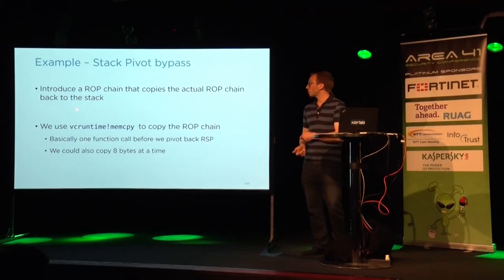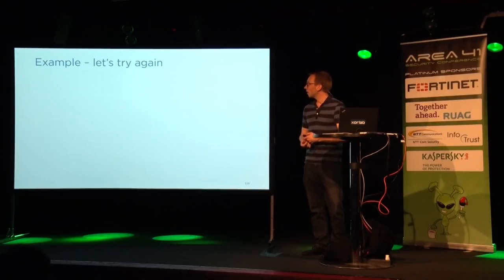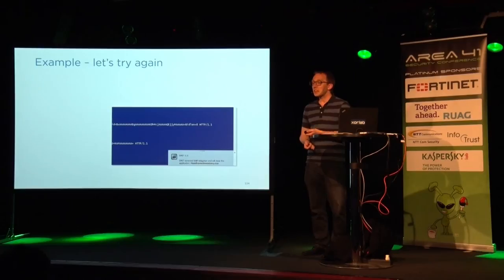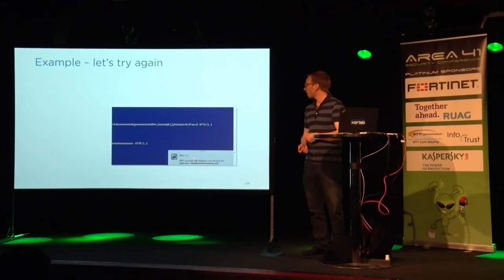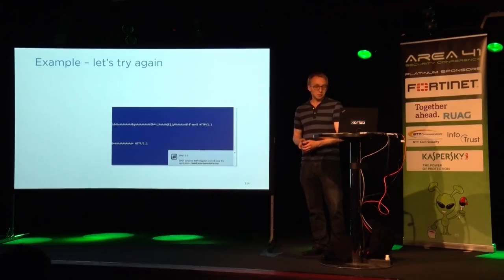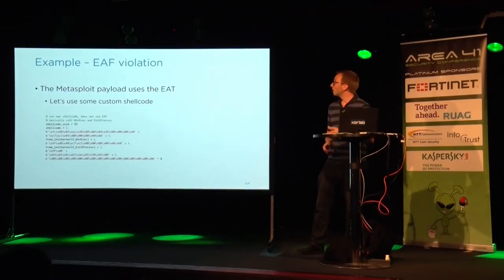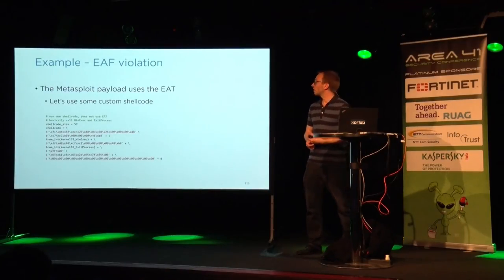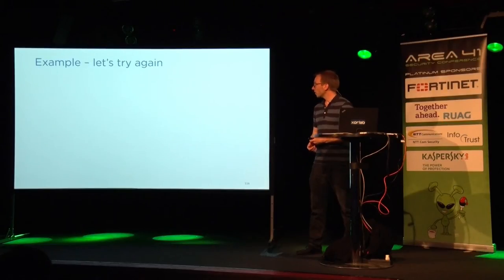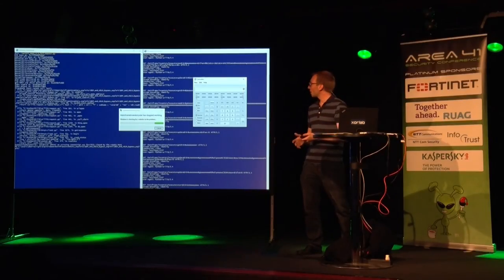For this example we used a memcpy, but you could do simple ROPing to copy byte by byte. We tried this and hit the next EMET violation: an EAF violation, because our shellcode scans through the export address table. We have some detailed information. So instead of using the Metasploit payload, we constructed our own payload and tried again. This time it works — no EMET complaining.